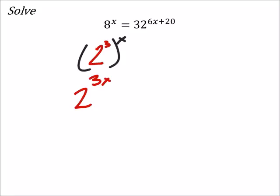And 32 is 2 to the power of 5. 2 to the power of 5.